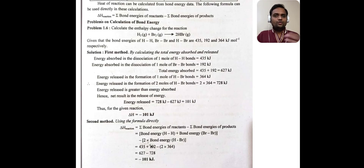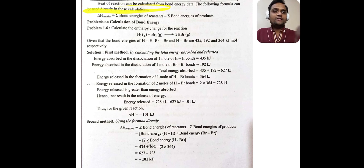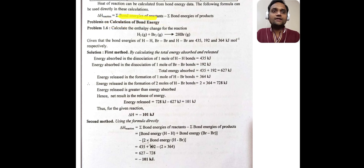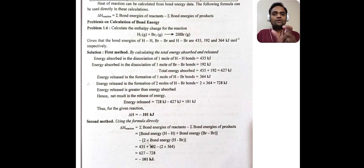The use of bond energy values: heat of reaction can be calculated from bond energy data. When we have the bond energy of various bonds, we can calculate the heat of reaction. The formula is: delta H reaction equals summation of bond energies of reactants minus summation of bond energies of products.